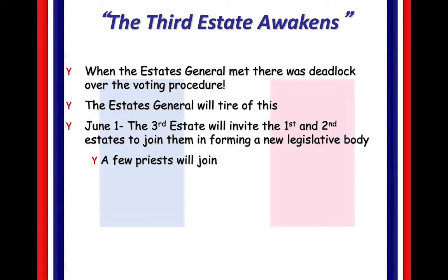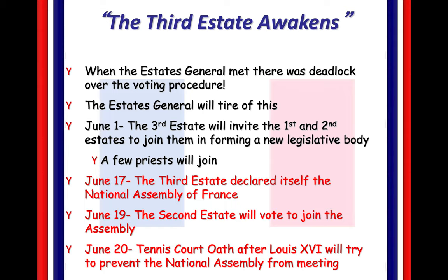In the summer of 1789, in June, the third estate is going to invite the first and second estates to join them in forming a new government. A few members join, but not many. Eventually the third estate is going to declare themselves the new government of France — the National Assembly of France. This is the very first phase of the revolution starting. They are tired of this, and there's going to be no consensus on voting. Eventually we see the second estate vote to join the assembly.